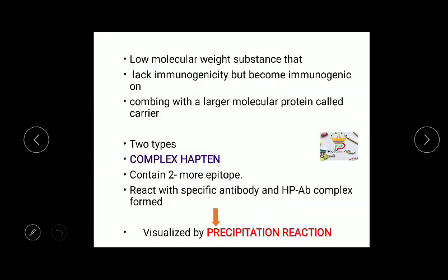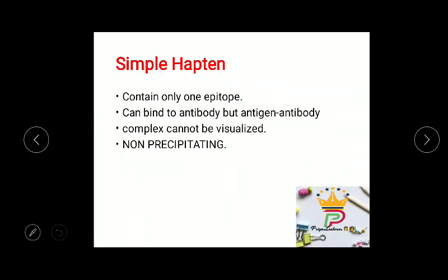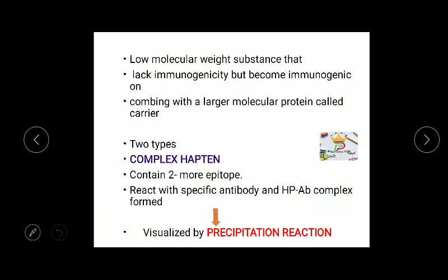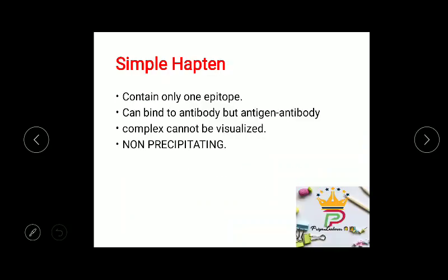There are two types of haptens: complex haptens and simple haptens. Complex haptens contain two or more epitopes, which is polyvalent, whereas simple haptens contain only one epitope — they are univalent.